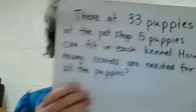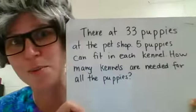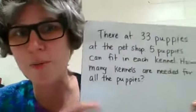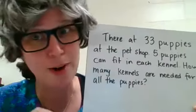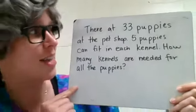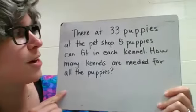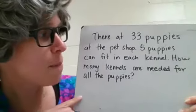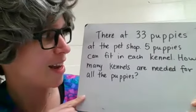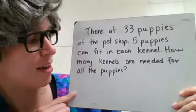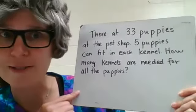Most of the problems you're going to see on the EOG are going to be word problems like this one about adorable puppies. So let's read this one and see how we can use our calculator and our brains to help figure out what to do here. It says there are 33 puppies at the pet shop. Five puppies can fit in each kennel. How many kennels are needed for all of the puppies?